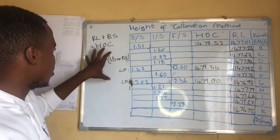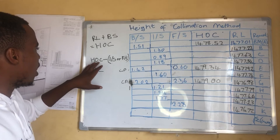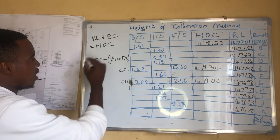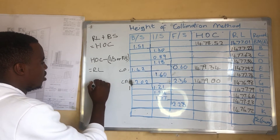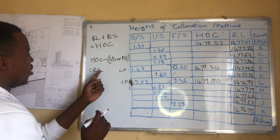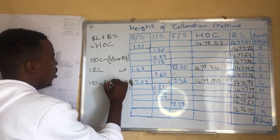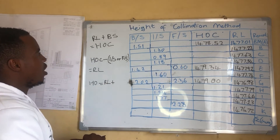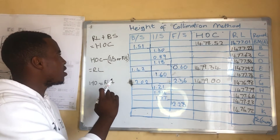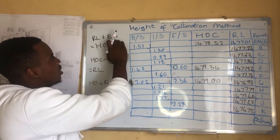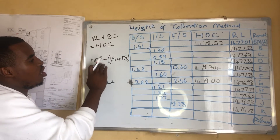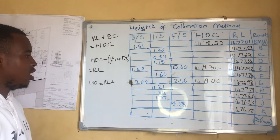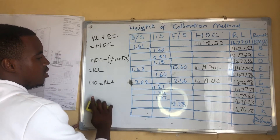Sometimes you might need to interchange these formulas. If you don't have the Height of Collimation but you have the intermediate sight or foresight with the Reduced Level, you just rearrange the formula: Height of Collimation equals Reduced Level plus the intermediate sight or foresight. So if you have the Height of Collimation and the backsight you can get the Reduced Level, and vice versa.